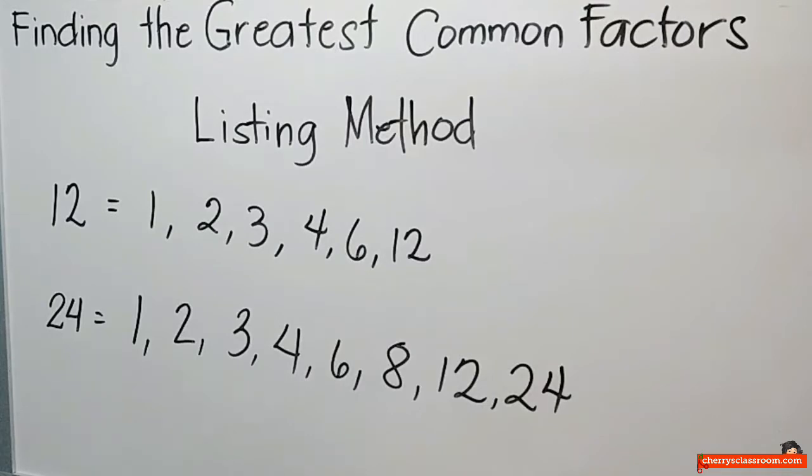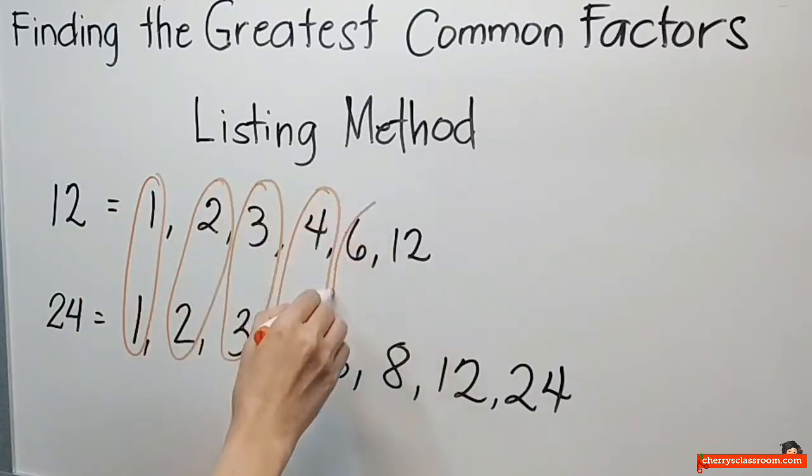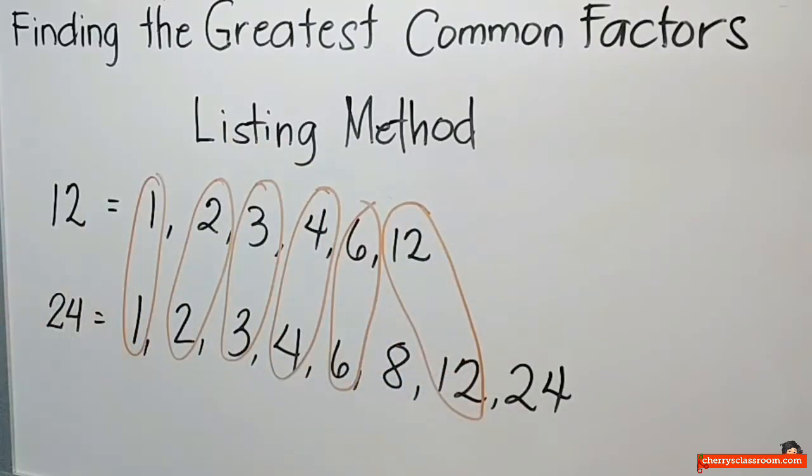Kupungin ko naman ngayon ang common sa kanila. So, ito yung mga common. Ngayon, ang inahanap natin ay ang greatest. So, ang pinakamalaking common sa kanila ay ang number 12. So, yan ay ang tinatawag na listing.